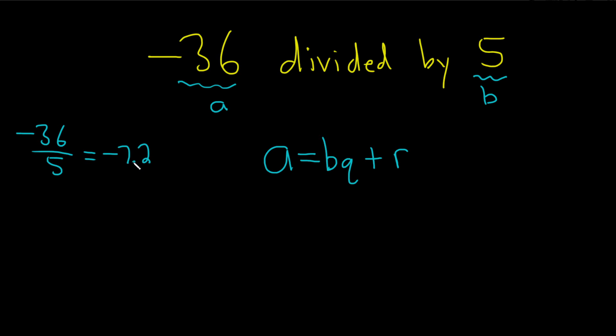Now here's the trickiest part of this problem. You want to round down always. This is a negative number, so when you round down you get negative 8. And that's your quotient. Your quotient is negative 8.